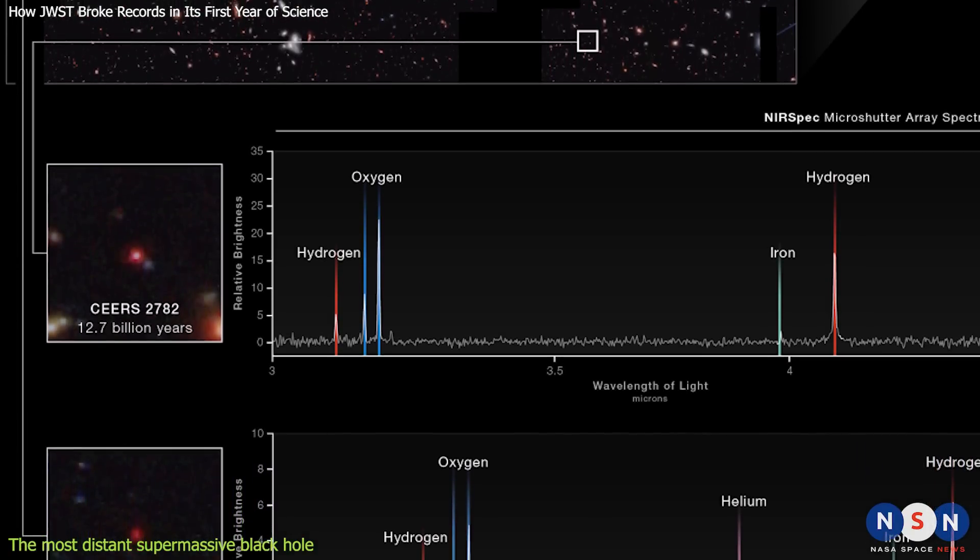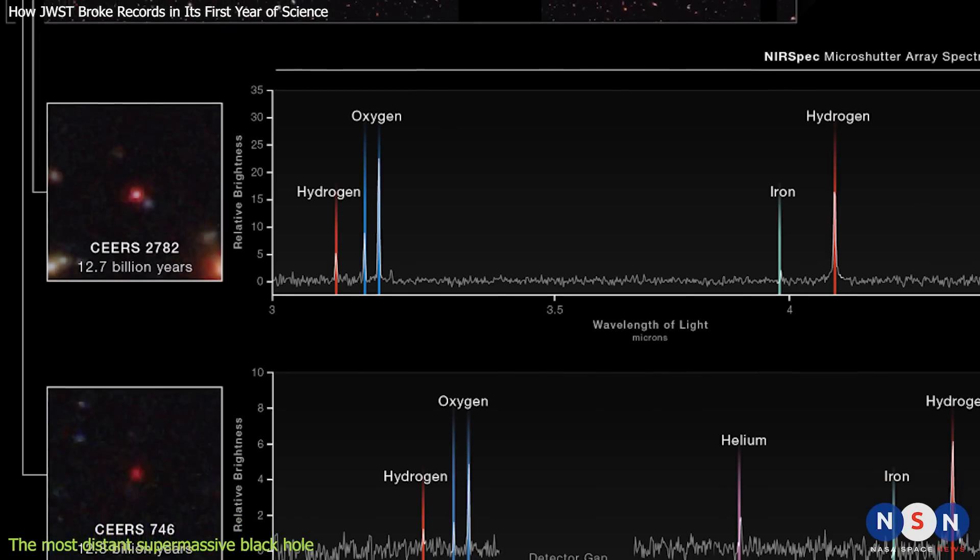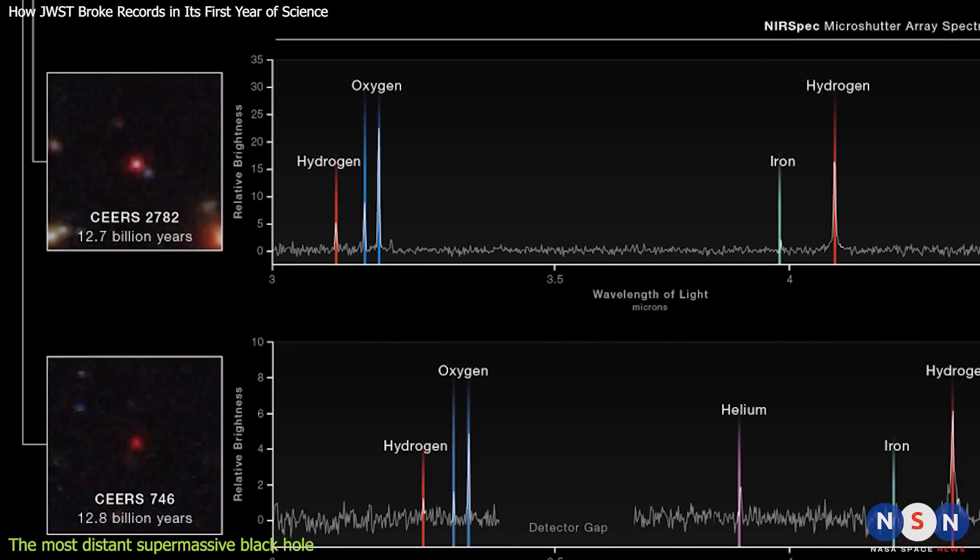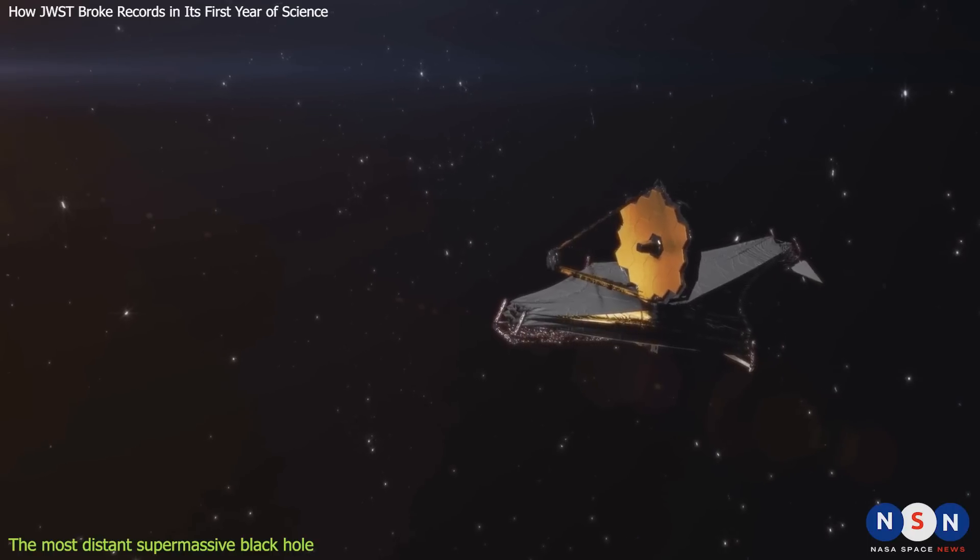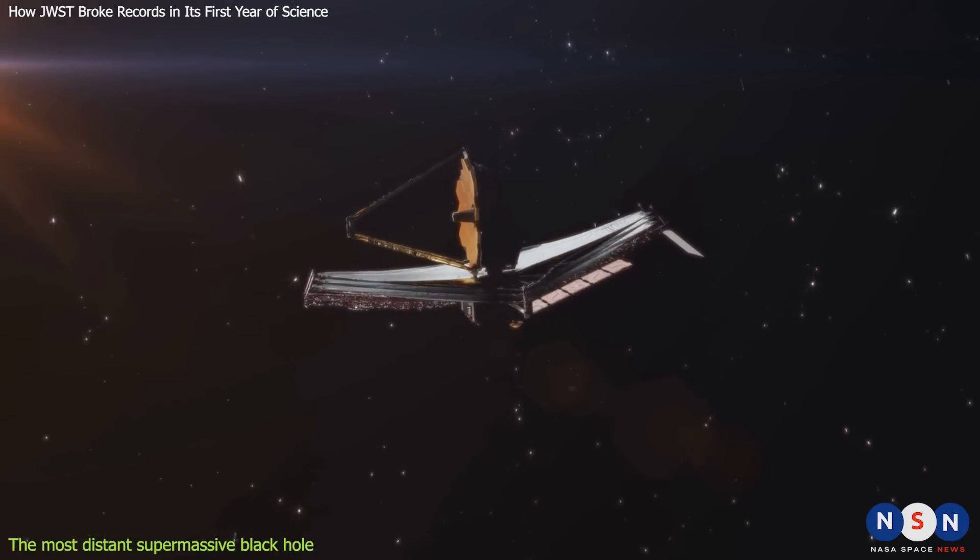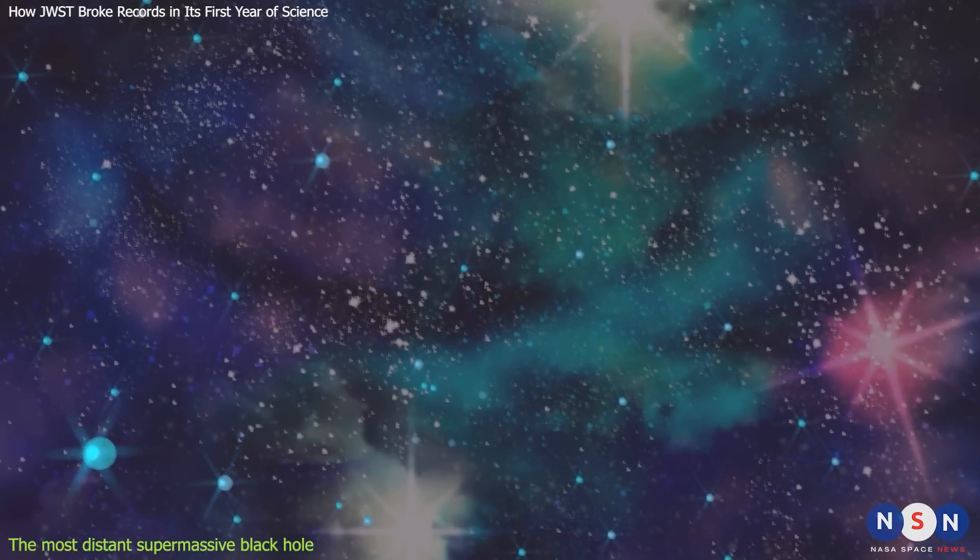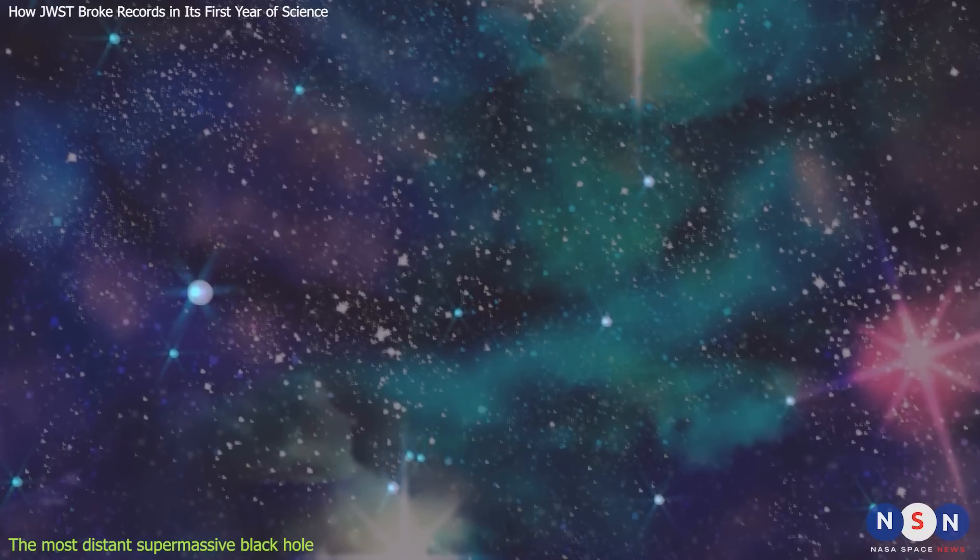JWST will continue to observe this galaxy and other candidates for distant supermassive black holes in the future, using its unparalleled sensitivity and resolution. This is not the only record-breaking discovery that JWST has made in its first year of operation. In the next section, we will talk about another amazing discovery, the first stars in the universe.